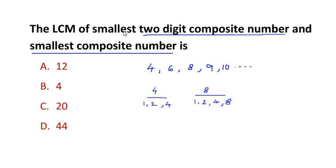They want us to find the LCM of the smallest two-digit composite number. The smallest two-digit composite number we can think of is 10, because two-digit numbers start with 10 and 10 has multiple divisors like 1, 2, 5, and itself.